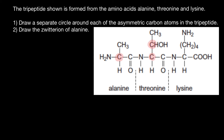Now let's consider the last amino acid, lysine. Of course, this carbon here is going to be chiral, just like in the other amino acids — it is connected to four different groups. Now let's consider the R chain. For example, this carbon is not chiral because on both sides it is connected to hydrogen, so it is not asymmetric. We have now shown all the chiral carbons in this tripeptide.